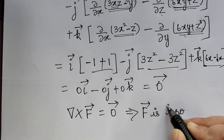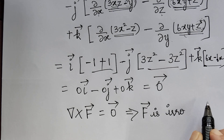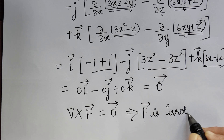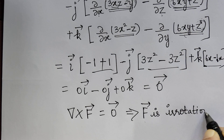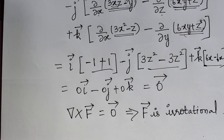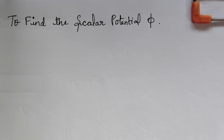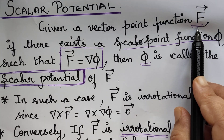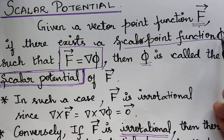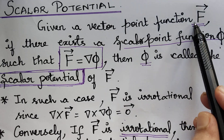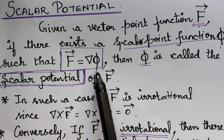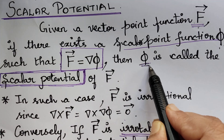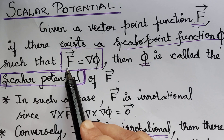So we have proved that nabla cross f vector equals 0 vector, which implies f vector is irrotational. Now, after proving this, we will find the scalar potential. As per the definition of scalar potential, if f vector is a given vector, then there exists a scalar point function phi such that f vector equals gradient of phi. That phi is known as the scalar potential. In order to find phi, we equate f vector to nabla phi.